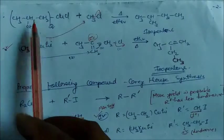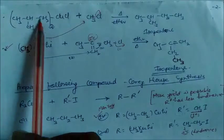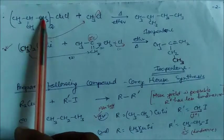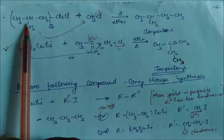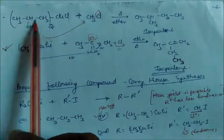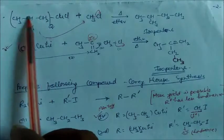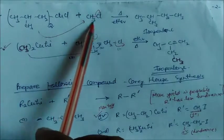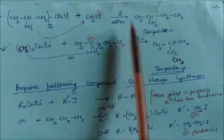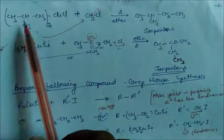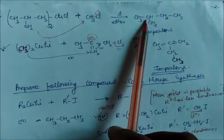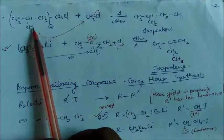Now we will look at bulky groups attached to the Gilman's reagent. Here a branched alkyl group is attached to CuCl; one of these branched alkyl groups attaches to give a branched alkane product — isopentene. You must remember that if you want to make this product, you have to arrange the Gilman's reagent appropriately.